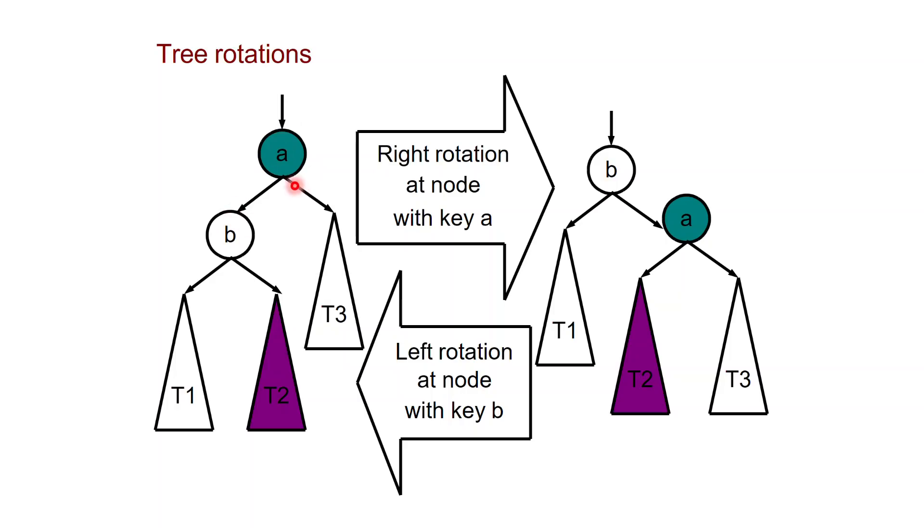which is just a node, a right child which is a whole subtree T3, and then B has a left child which is a subtree T1 and right child which is a subtree T2.